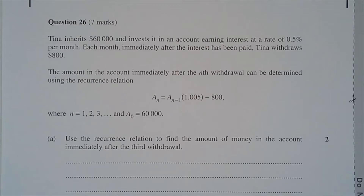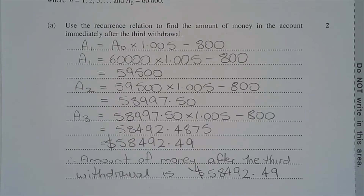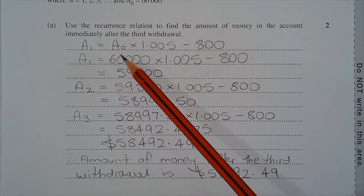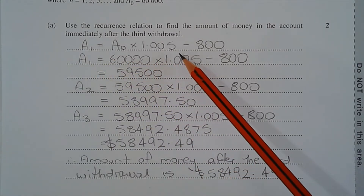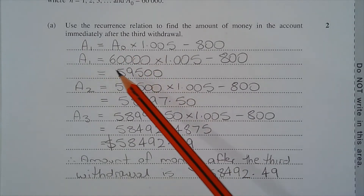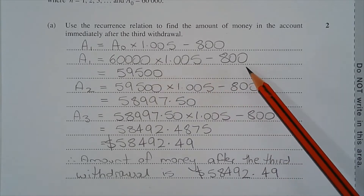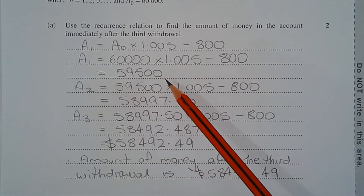Part A. Use the recurrence relation to find the amount of money in the account immediately after the third withdrawal. Using the recurrence relation, the amount of money in the account immediately after the first withdrawal is given by A1 equals A0 multiplied by 1.005 minus 800, and A0 is equal to 60,000. So A1 equals 60,000 multiplied by 1.005 minus 800, which equals 59,500.